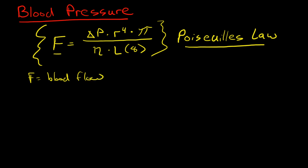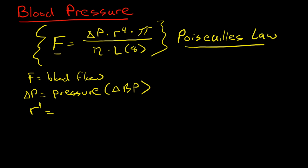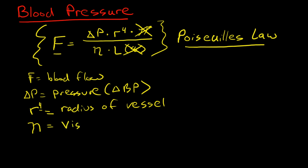Blood flow equals the change in pressure — in this case blood pressure — times the radius of the vessel to the fourth power. That's very important to recognize and I'll explain why in a minute. Pi just stands for a constant, and we're not going to worry about that or the eight. This stands for the viscosity of blood and L stands for length.